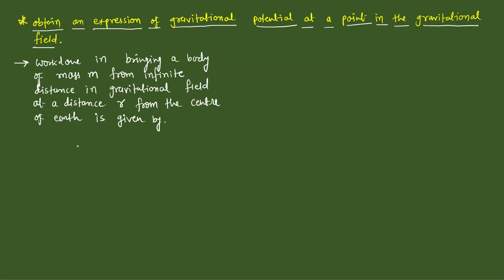That work is against the gravitational field, so W is equals to minus GMₑm divided by r. W = -GMₑm/r.